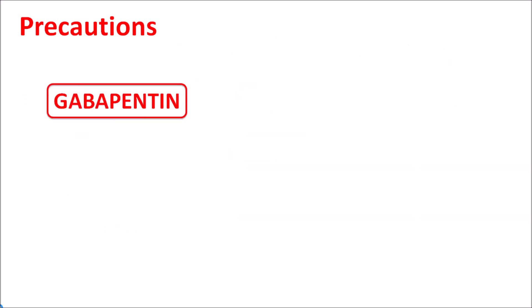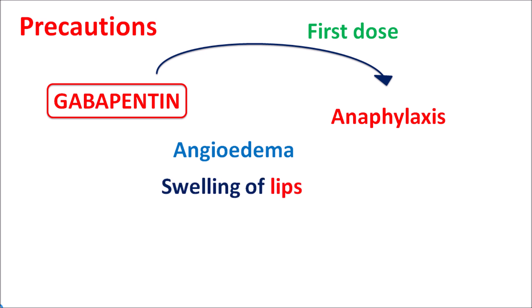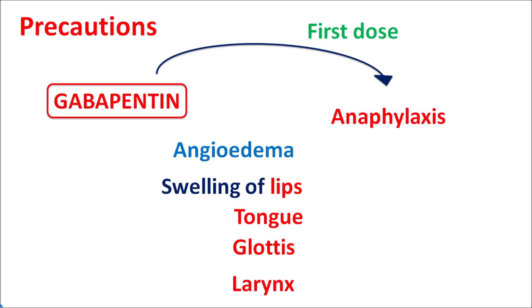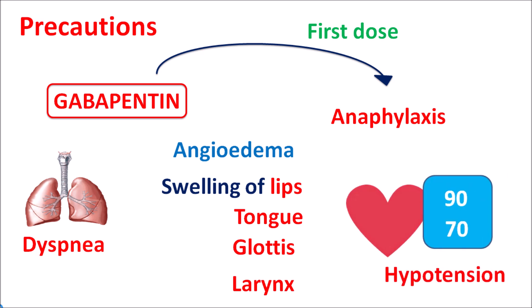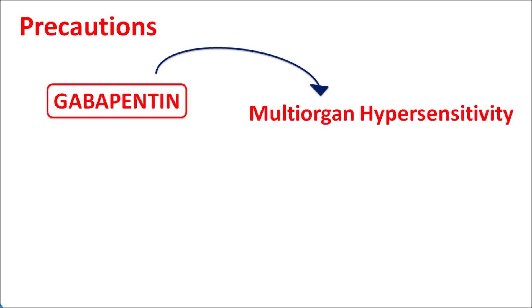Gabapentin can produce anaphylaxis, which may be observed with the first dose. It can cause angioedema resulting in swelling of the lips, tongue, glottis, and larynx, as well as dyspnea, bronchoconstriction, and hypotension. All these effects can be observed with gabapentin due to anaphylaxis.